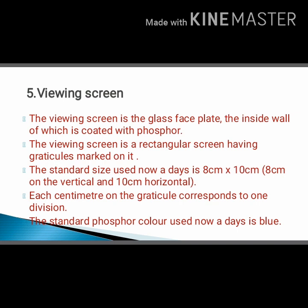The fifth feature is the viewing screen. The viewing screen is a glass plate, and the inside of the glass plate is coated with phosphor. It is a rectangular screen having a series of fine lines marked on it. Eight centimeters on the vertical and 10 centimeters on the horizontal are the two standard sizes for the viewing screen. Each centimeter on the vertical corresponds to one division, and the standard phosphor color is blue.